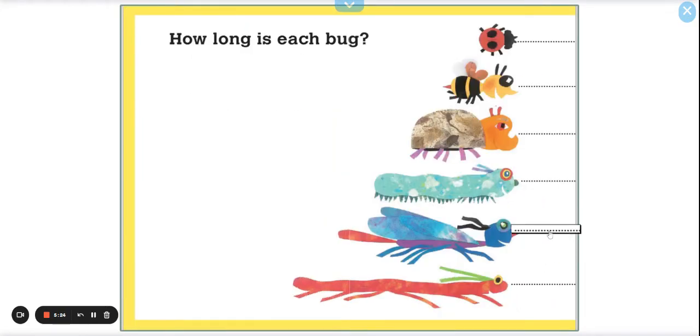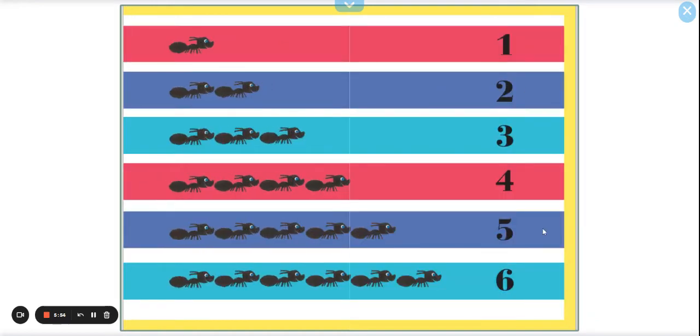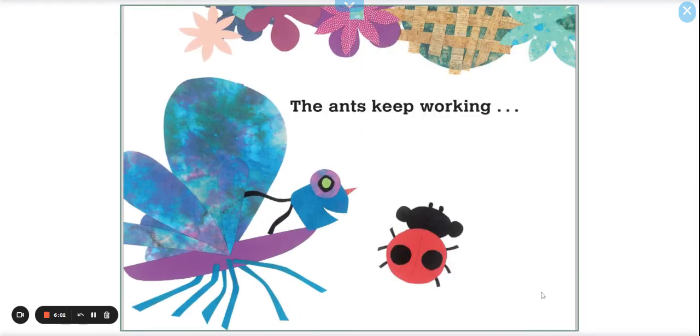How long is each bug? Do we remember? Could we estimate? I remember our walking stick was six ants long. And as I'm looking at this graph, if our walking stick was six ants long, how many ants long would our butterfly be? It's just one less. Five. And then our caterpillar was four. Our beetle was three. Our bee was two. And our ladybug was one. Look. We have this way to see how many ants long each bug was. We were right.